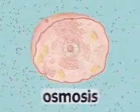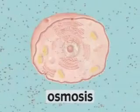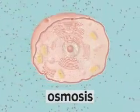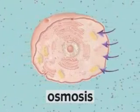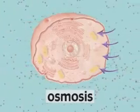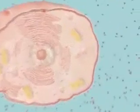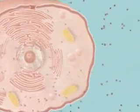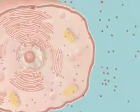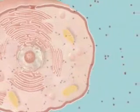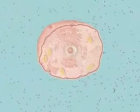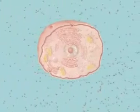When particles do move through the cell membrane, that form of diffusion is called osmosis. Osmosis is the movement of water and dissolved materials through cell membranes. Osmosis is a type of diffusion, and it always involves materials crossing over a membrane, and always involves water.